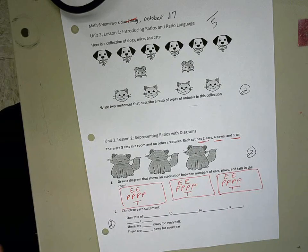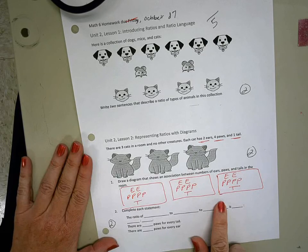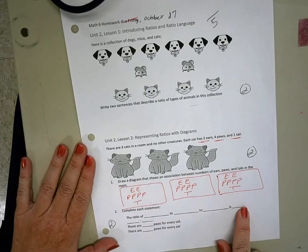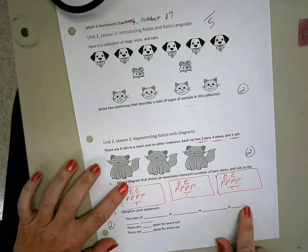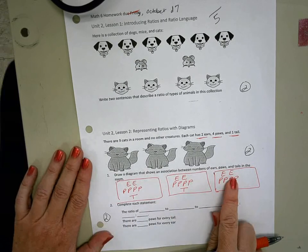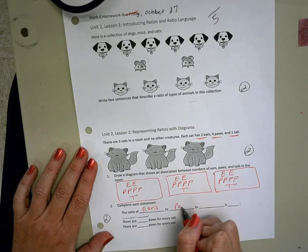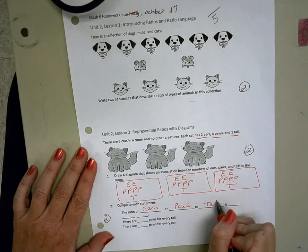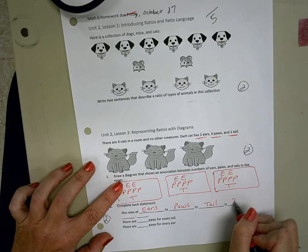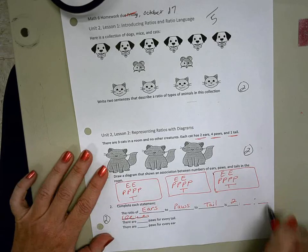The ratio of, so your choice here to put the words in any order you want, but whatever order you put your words in, make sure that the number you choose matches up with its appropriate term. So I'm gonna keep this same pattern, so the ratio of ears to paws to tails is, how many ears do we have? Two. And I'm actually gonna cross this off and kind of put it here so it's all next to each other, easier to read.